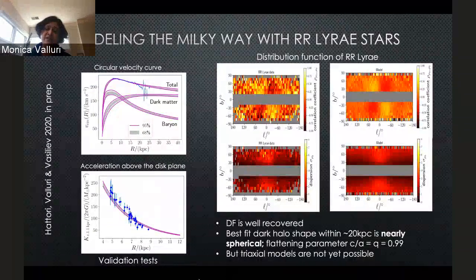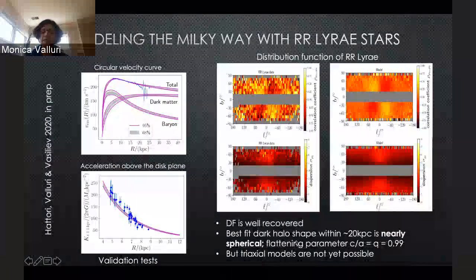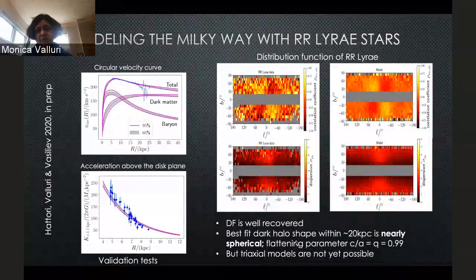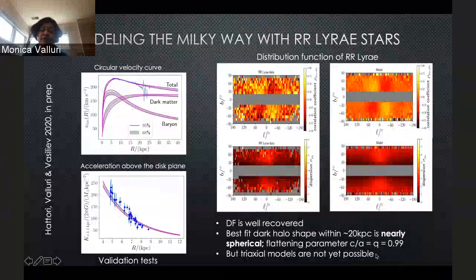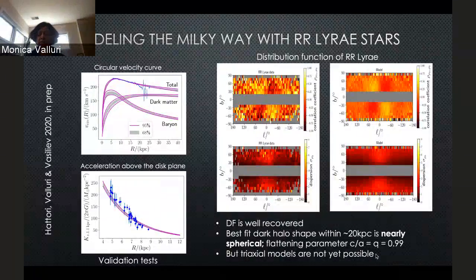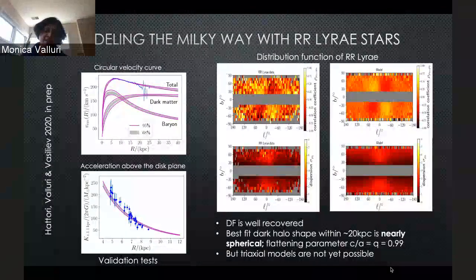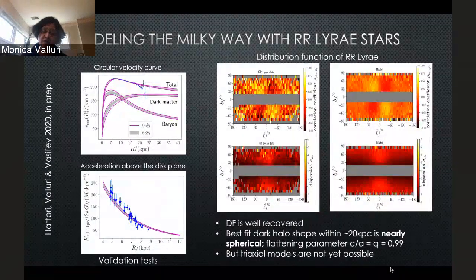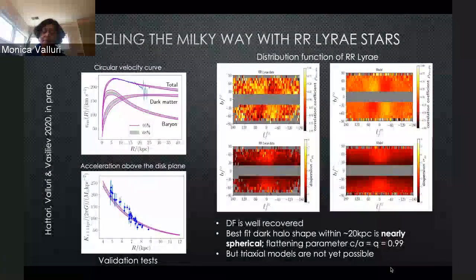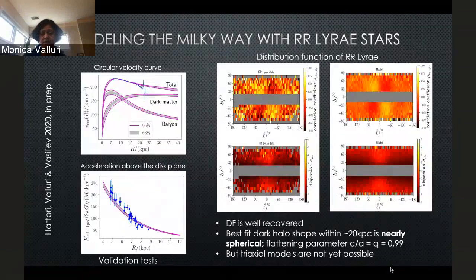This modeling tells us that the halo shape within 20 kiloparsecs is almost spherical, which is encouraging. However, this is not yet based on a triaxial model, and the goal has been to improve our modeling so that we can get to triaxial models.